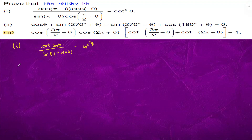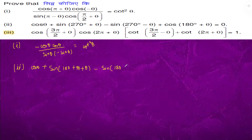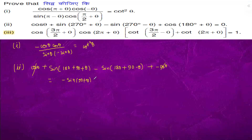Question 2: cos θ — sin becomes sin(180° + 90° + θ) minus sin(180° + 90° - θ), plus cos. At 180° + θ it is -cos θ. So this and this are getting cancelled. sin(180° + θ) is -sin(90° + θ), and this is +sin.